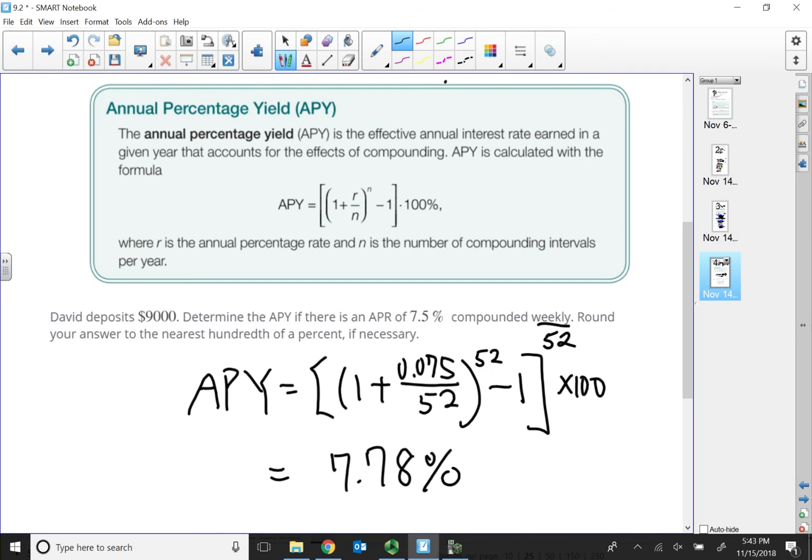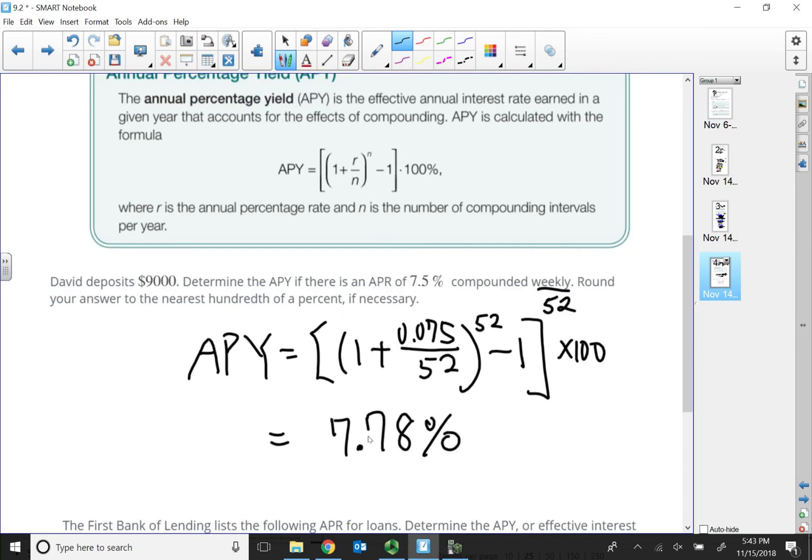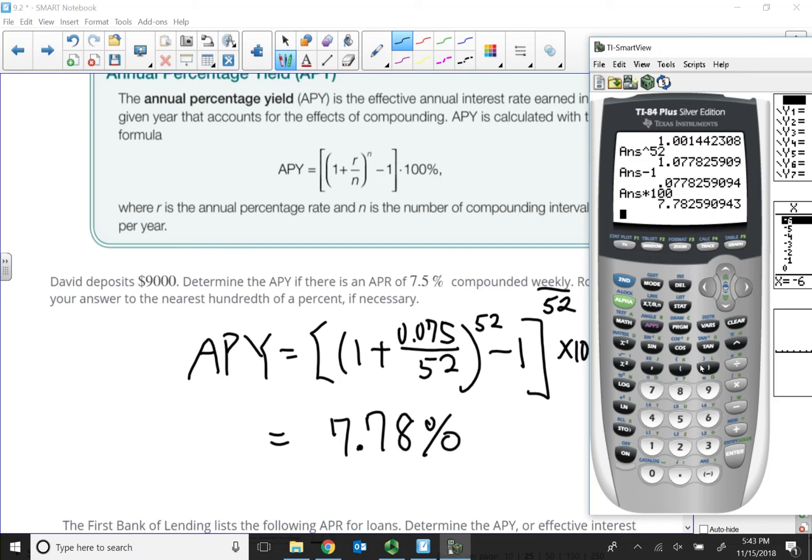My effective yield is at 7.78%. So, that means, at the end of the year, $9,000 times 0.0778, that means this is the interest I should get, yielding the interest.